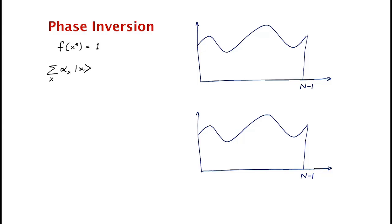Initially, we have no idea which value x we are looking for. So initially, all these alpha_x's are going to be equal, and equal to 1 over square root of N.